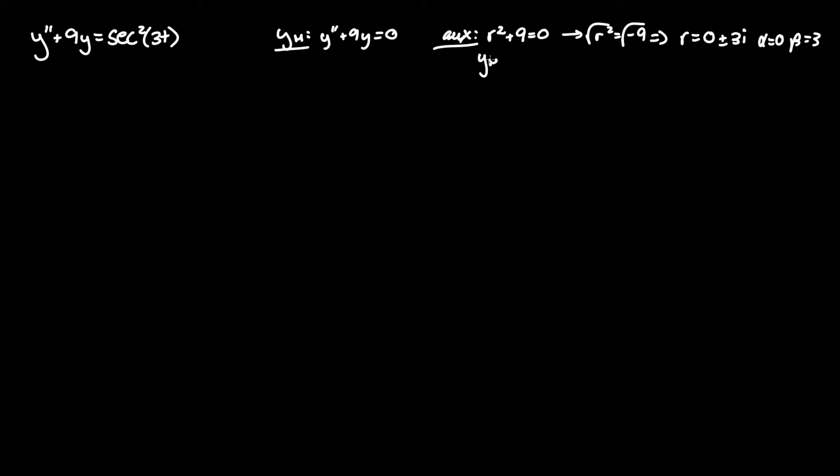Therefore y homogeneous in a complex solution equals e to the alpha t times c1 cosine of beta t plus c2 sine of beta t.